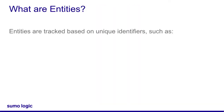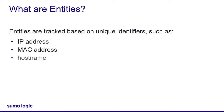What are entities? Broadly, entities are a thing tracked by CloudSim. Entities are tracked based on unique identifiers, such as an IP address, MAC address, hostname, or username. CloudSim admins can also define a custom entity. Custom entities can be any field in a schema, like an application type.